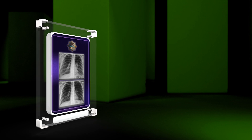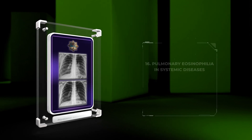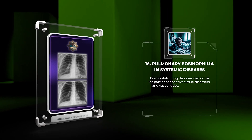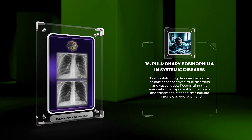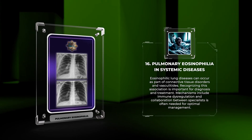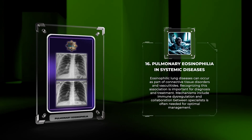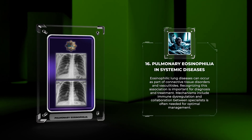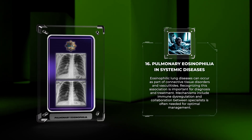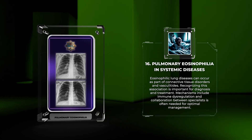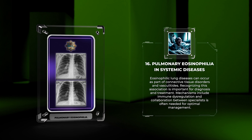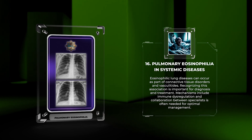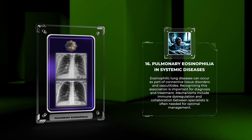Eosinophilic lung diseases can occur as part of connective tissue disorders and vasculitides. Recognizing this association is important for diagnosis and treatment. Mechanisms include immune dysregulation, and collaboration between specialists is often needed for optimal management.